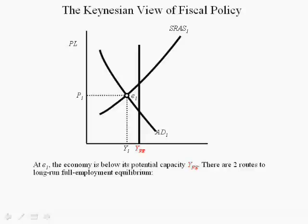In the diagram, the economy is in a recessionary gap because real GDP, denoted Y1, is less than potential output or full employment output, denoted Y subscript FE. At equilibrium E1 — the intersection of aggregate supply and aggregate demand — unemployment is high because we're not using all of our resources, and labor is one of our many resources.